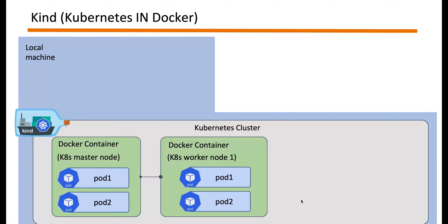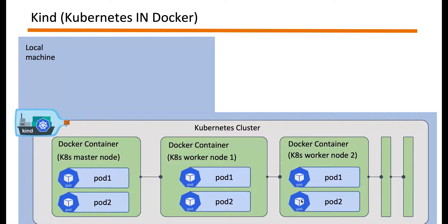As usual, you can spin up multiple pods within each node. You can also configure Kind to spin up multiple containers, adding more worker nodes to your Kubernetes cluster. This of course depends on how much your local machine can handle, depending on how much memory it has. That's how our Kubernetes cluster will be formed within our local machine through Kind.